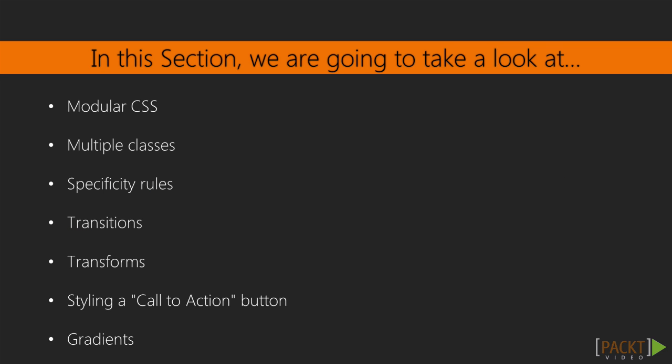We have a lot to go over in this section while building our buttons. Modular CSS and multiple classes will be the first two videos, before we switch gears and talk about how selectors can overrule each other in the specificity rules video. We'll then get into CSS3 pretty heavily with transitions, transforms, and gradients, and we'll go through every step of styling a big call-to-action button.